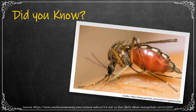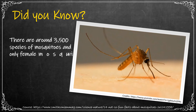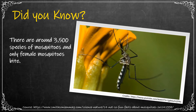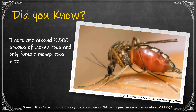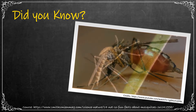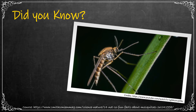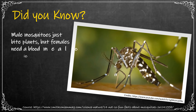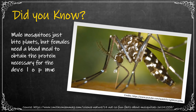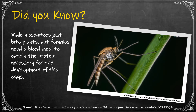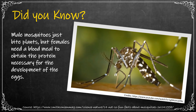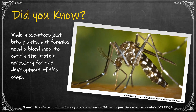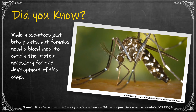Did you know that there are around 3,500 species of mosquitoes and only female mosquitoes bite? Male mosquitoes just feed on plants, but females need the blood meal to obtain the protein necessary for the development of their eggs. So if you've been bitten by a mosquito, for sure it was a female.